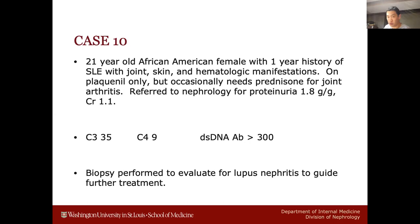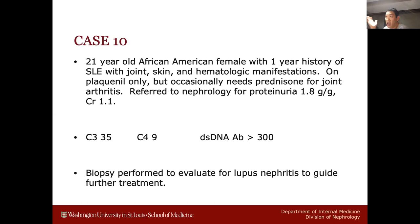The last case is a hard one — let's have Gonzalo and Maggie tag team it. A 21-year-old African-American female with a one-year history of lupus with joint, skin, and rheumatologic manifestations, on prednisone for arthritis. She has subnephrotic proteinuria, creatinine almost normal, low C3, low C4, very high dsDNA. We have classic lupus; the biopsy is to determine what class of lupus nephritis we're dealing with, since that guides treatment.